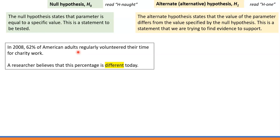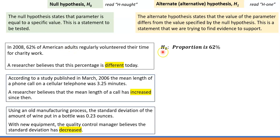When we say percentage, what kind of parameter is that? It's proportion. 62% represents a proportion, so we're working with proportion here. The first sentence represents the null hypothesis: H0 states that proportion is 62%.